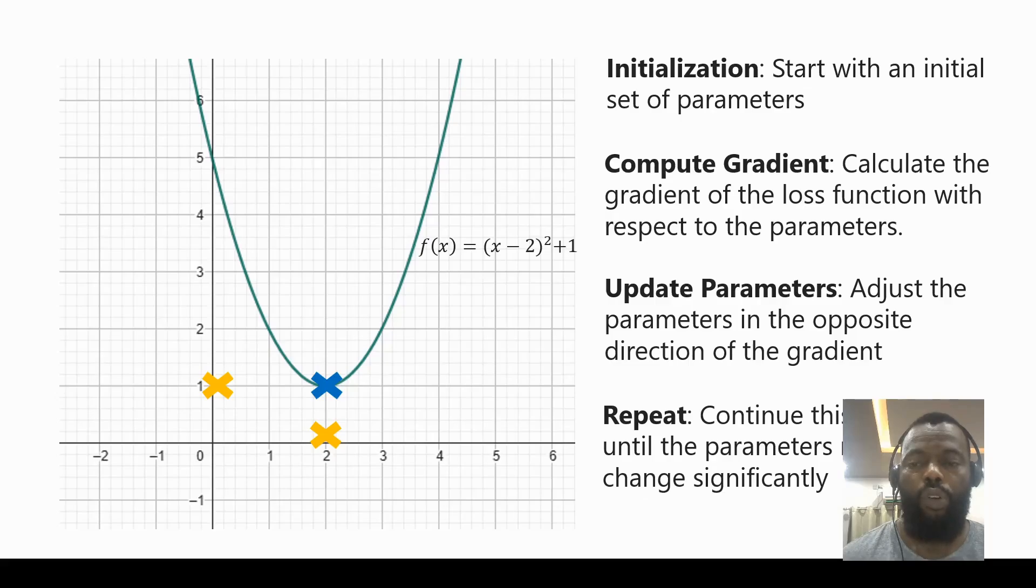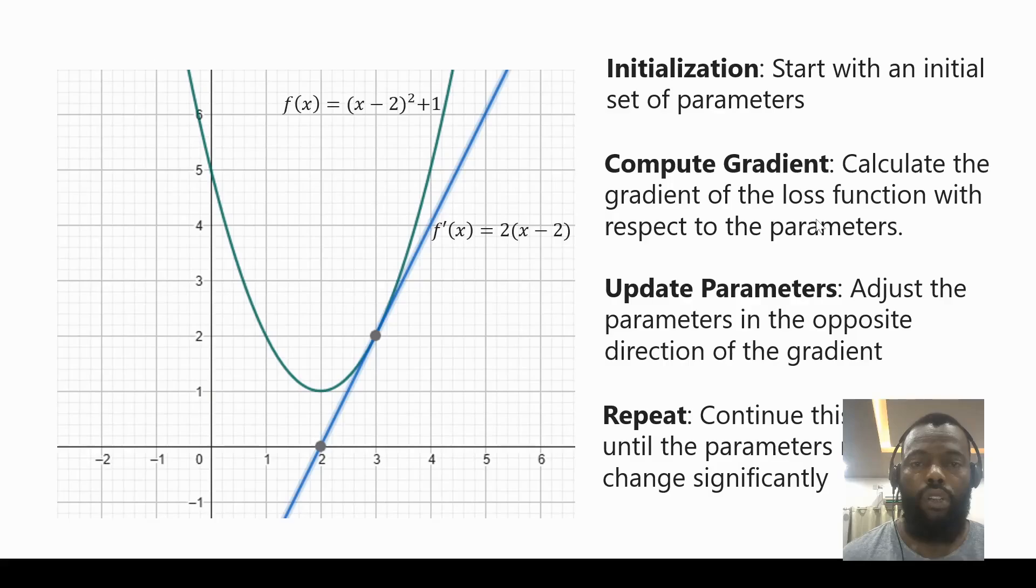until the parameters no longer change significantly. After we choose a random value to start with, we have to have a gradient function. Let's see how we get the gradient function.